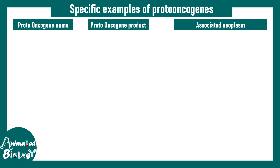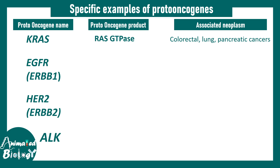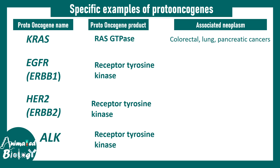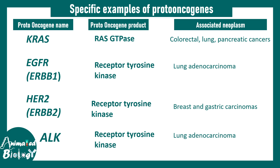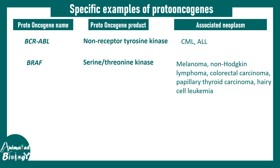Let's talk about some proto-oncogene examples relevant to USMLE. KRAS is a RAS GTPase molecule associated with colorectal, lung, and pancreatic cancers. EGFR, HER2, and ALK are all receptor tyrosine kinases whose mutations are associated with lung adenocarcinoma, breast, or gastric carcinomas. BCR-ABL is a non-receptor tyrosine kinase involved in CML and ALL. BRAF is a serine-threonine kinase associated with melanoma, non-Hodgkin's lymphoma, colorectal carcinoma, papillary thyroid carcinoma, and hairy cell leukemia.